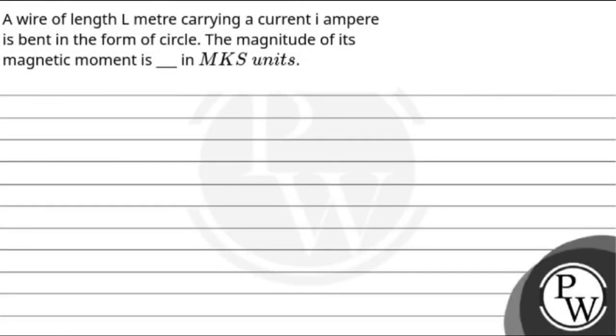Hello, let's see this question. The question says: if a wire of length L meter carrying current i ampere is bent in the form of a circle, the magnitude of its magnetic moment is ___ in MKS units. So the key...